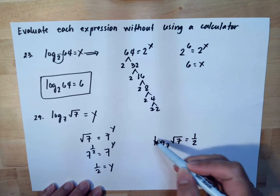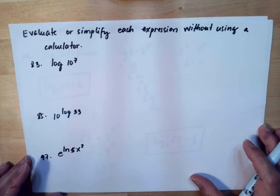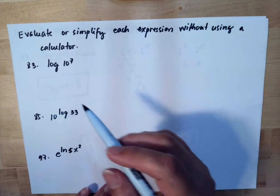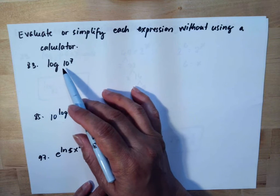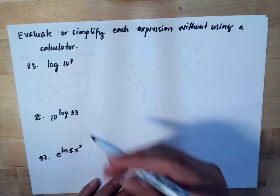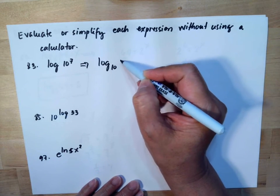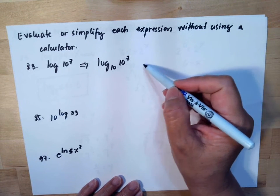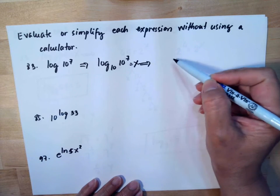Now here, evaluate or simplify each expression without using a calculator. For log, if there's no base, the base of this is 10. So basically this is log base 10 of 10 to the 7.